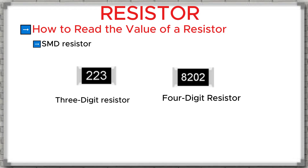Similar to color band resistors, SMD resistors also have their own way to read the value. The difference is, instead of using color bands, an SMD resistor has the numbers printed directly on its body. SMD resistors usually do not show tolerance information. We mainly see two types: three-digit SMD resistors and four-digit SMD resistors. For the three-digit type, the first two digits are the value and the third digit is the multiplier — the number of zeros to add. For the four-digit type, the first three digits are the value and the fourth digit is the multiplier.